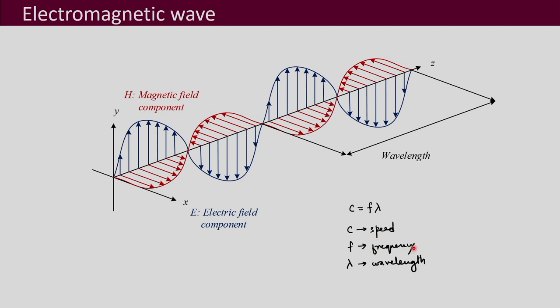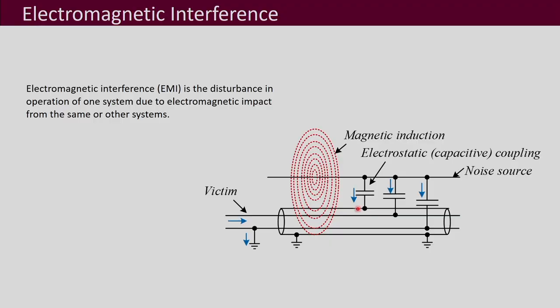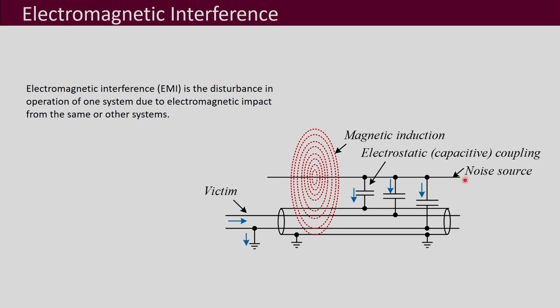If the frequency is low, the wavelengths are going to be very long. For electromagnetic interference, the range of frequencies of concern are high frequencies — in the range of kilohertz, hundreds of kilohertz and above, and especially in the megahertz range. These are the frequencies in the electromagnetic spectrum which create electromagnetic interference. To understand this phenomenon, let us say we have two conductors close to each other. One conductor is carrying some current and has some noise in it — this is the source of noise.